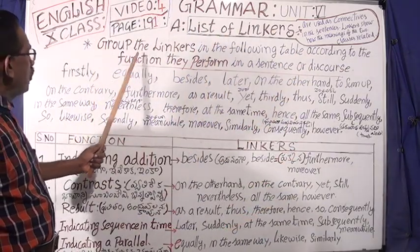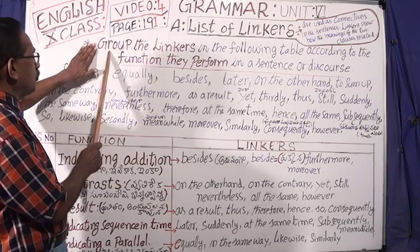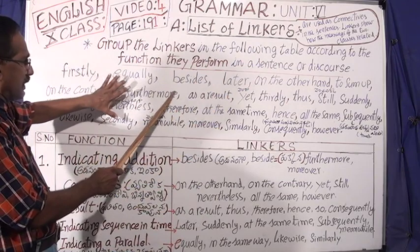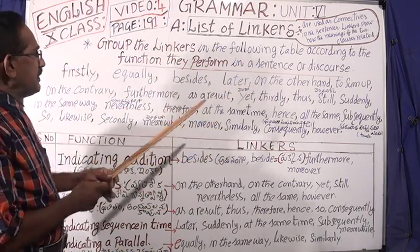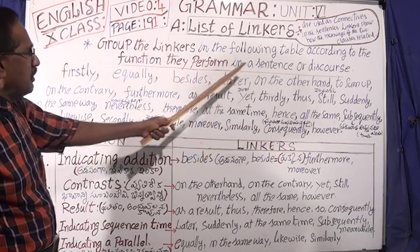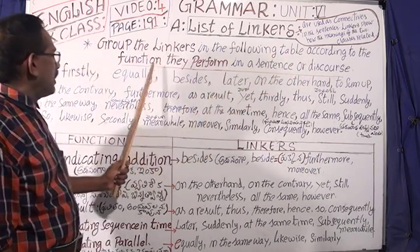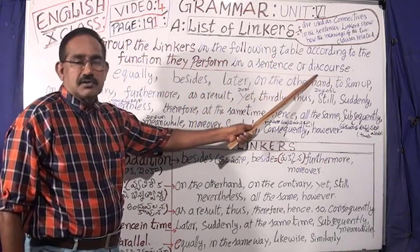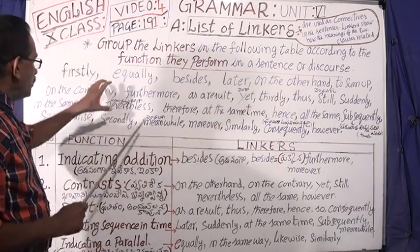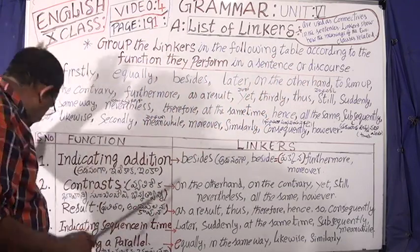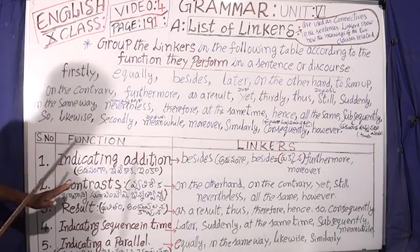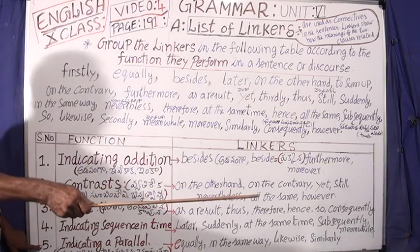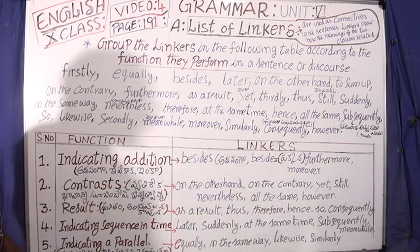Group the linkers in the following table. What are the linkers in the following table? Group the linkers in the following table according to the function they perform in a sentence or discourse. If you use the linkers in the following table, then you arrange headings. You choose headings like 1, 2, 3, 4, 5, 6 or more. You can arrange the headings in a small box.